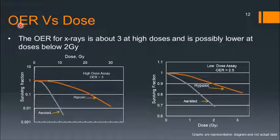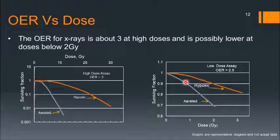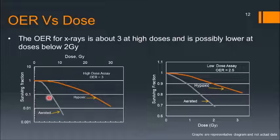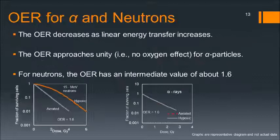The oxygen enhancement ratio also changes with dose. The OER for x-rays is about 3 at high doses and is lower at doses below 2 gray. For example, at a low dose, the OER is about 2.5 — that is, the ratio of doses under hypoxic to aerated conditions for the same surviving fraction is about 2.5. At high doses of about 10 to 30 gray, the OER is about 3.